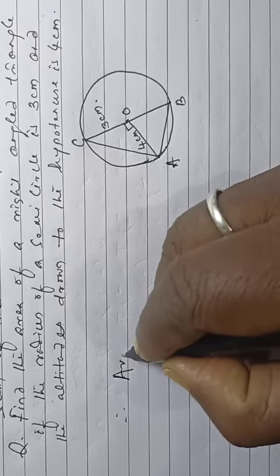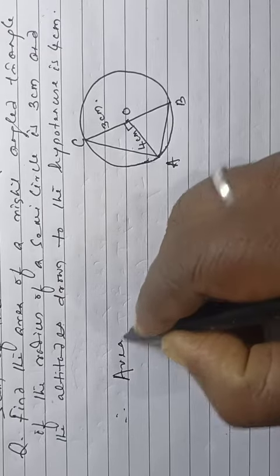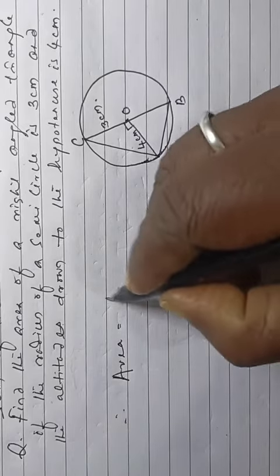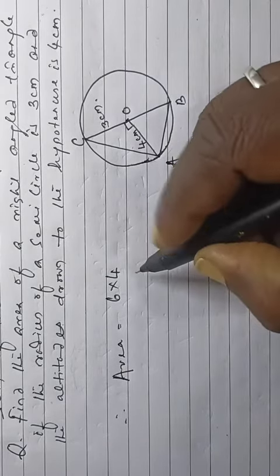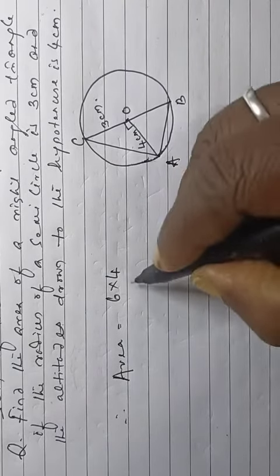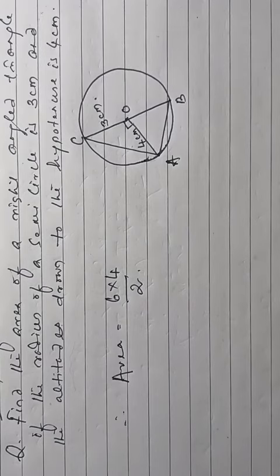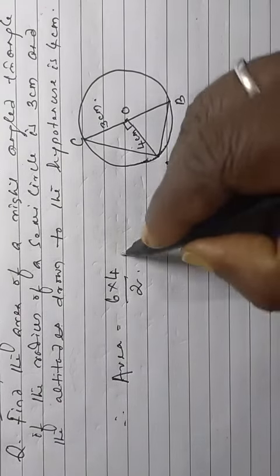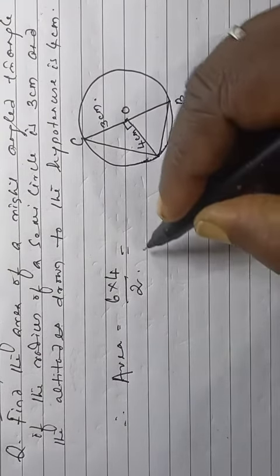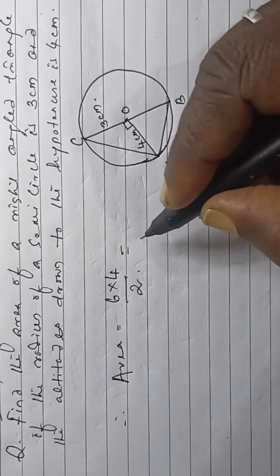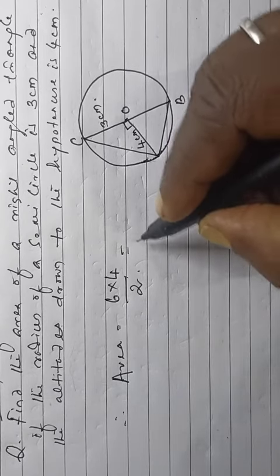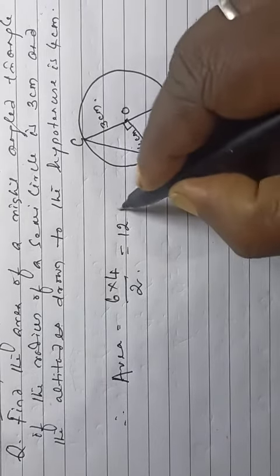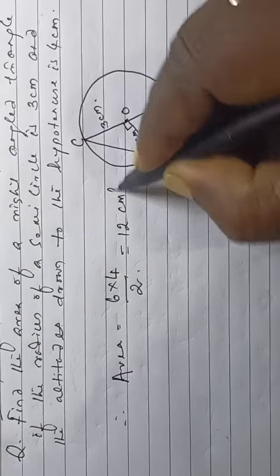Therefore, area is equal to half base into height, which is 6 into 4 divided by 2, giving the area of the triangle as 12 cm squared.